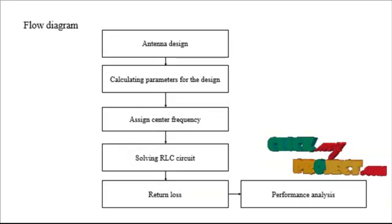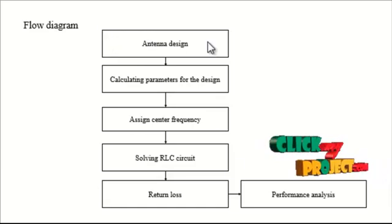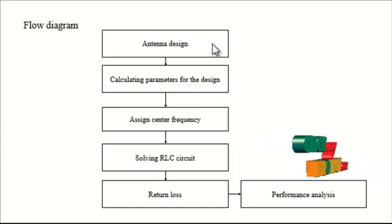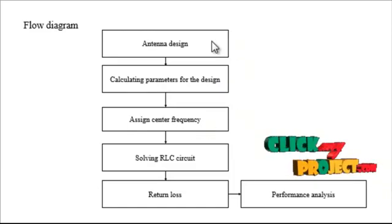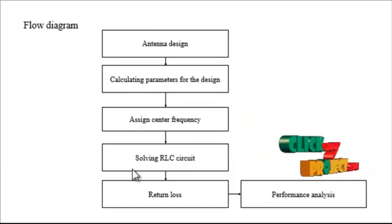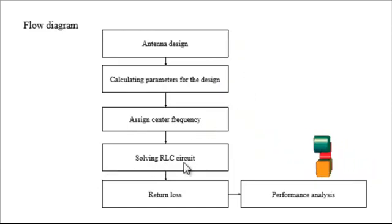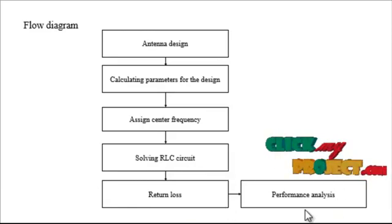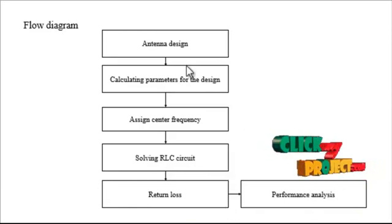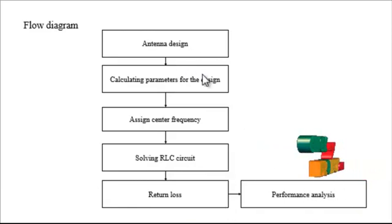Let us discuss about the flow diagram of the process. First, the antenna should be designed and the parameters calculated. Then assign the center frequency of the antenna. Then solve the RLC circuit and find the return loss. Finally, calculate the performance output.